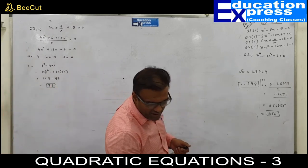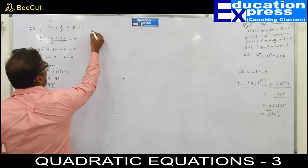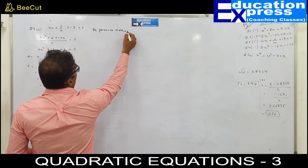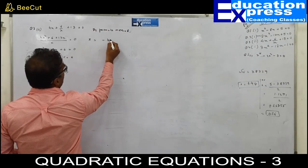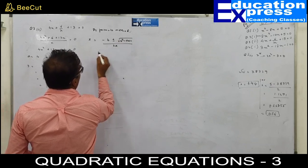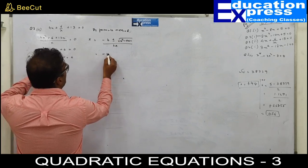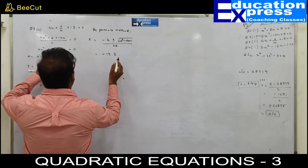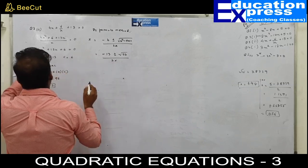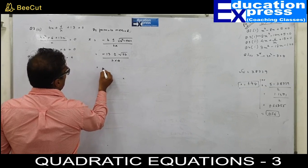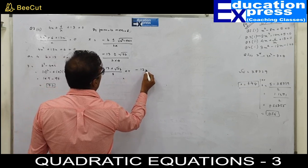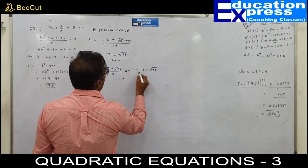b squared: 13 squared minus 4 into a which is 4, into c which is 6. That gives 169 minus 96, so my discriminant D is 73. 73 is not a perfect square. By formula method: x equals minus b plus or minus square root of b squared minus 4ac, upon 2a. Substituting: minus 13 plus or minus root 73, upon 2 into 4 which is 8. So x equals minus 13 plus root 73 upon 8, or minus 13 minus root 73 upon 8.